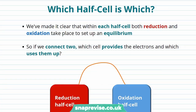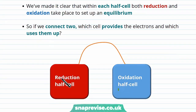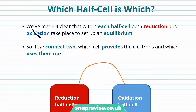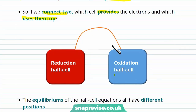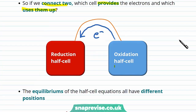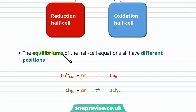You should remember that when we started this video, we talked about making a full cell from two half cells — one oxidation and one reduction half cell. But when we looked at building our half cells, we made it clear that each half cell contains both a reduction and an oxidation process in equilibrium. So if we connect two of these half cells, which one provides electrons and becomes the oxidation half cell, and which one uses them up as the reduction half cell? The key point is that the equilibriums set up in the half cell equations have different positions.